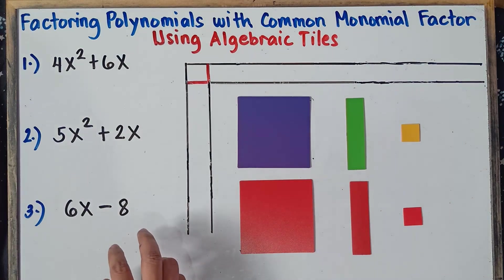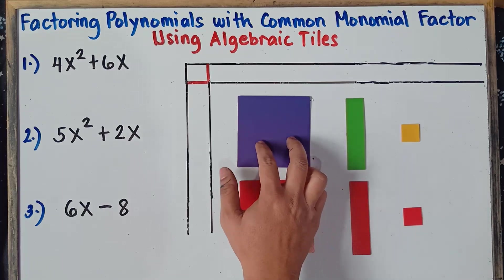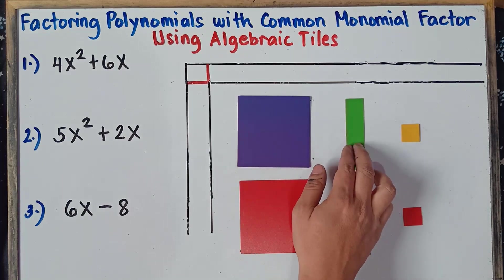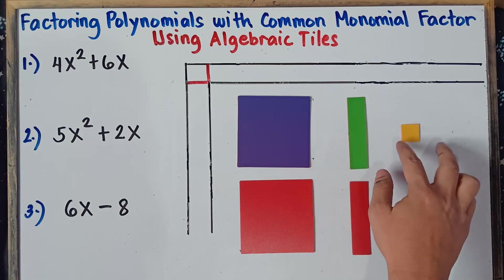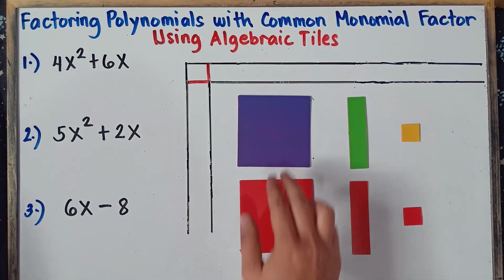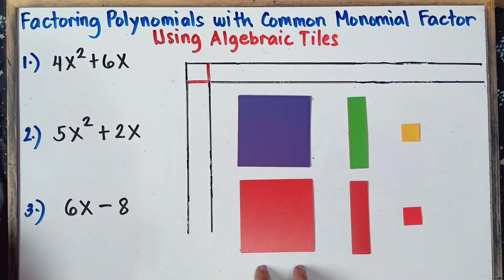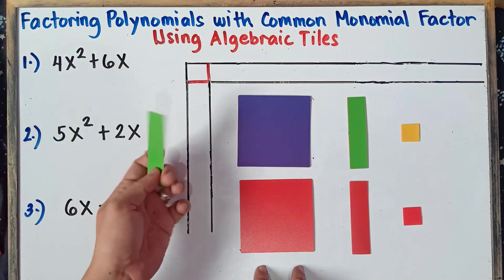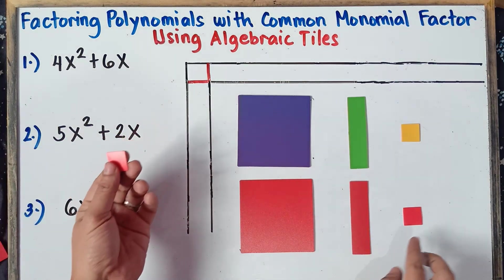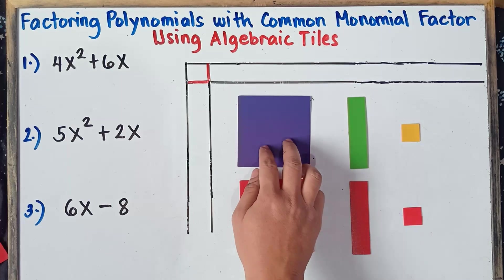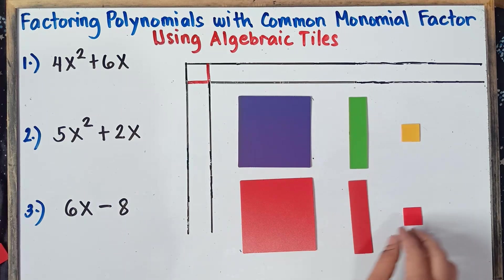Before we answer the following examples, I have here the following algebraic tiles. This is equivalent to x squared, this is positive x, and this will be positive 1. So this is positive x squared, positive x, and positive 1. Now if you rotate this positive x squared, you will have negative x squared — the red one. If you rotate this positive x, you will have negative x. If you rotate this positive 1, you will have negative 1. So we have positive x squared, positive x, positive 1, negative x squared, negative x, and negative 1.